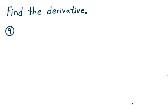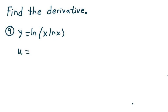On number 9, we have y equals natural log of x times the natural log of x. So this is a classic chain rule problem. My inside function is x times the natural log of x, and I'm going to call that u.